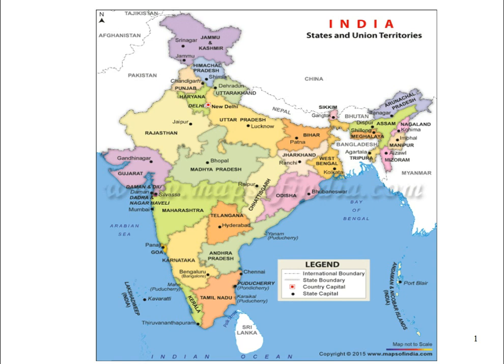In India Political Features, we will look at the government of India and how India has been divided politically. India consists of 29 states and 7 union territories, and is governed by the central government and the state government.